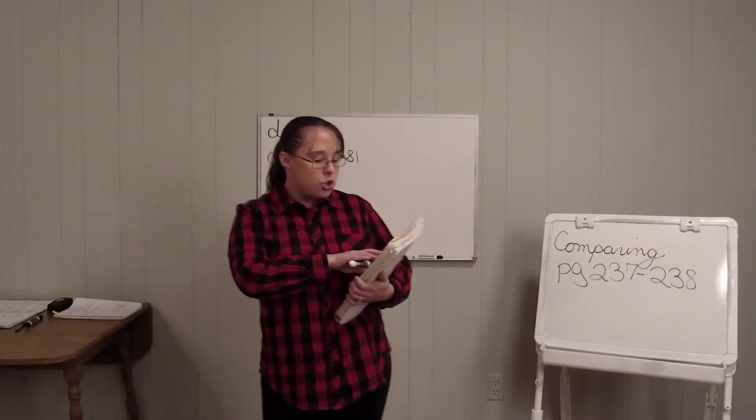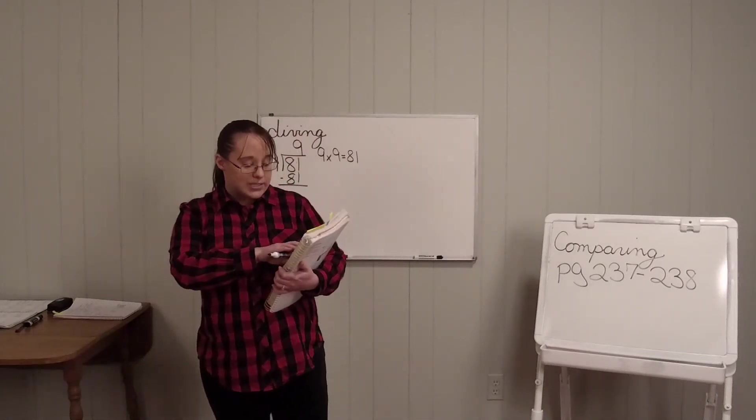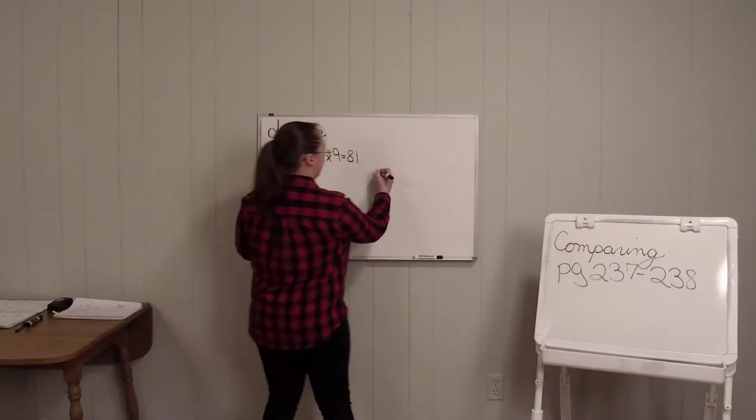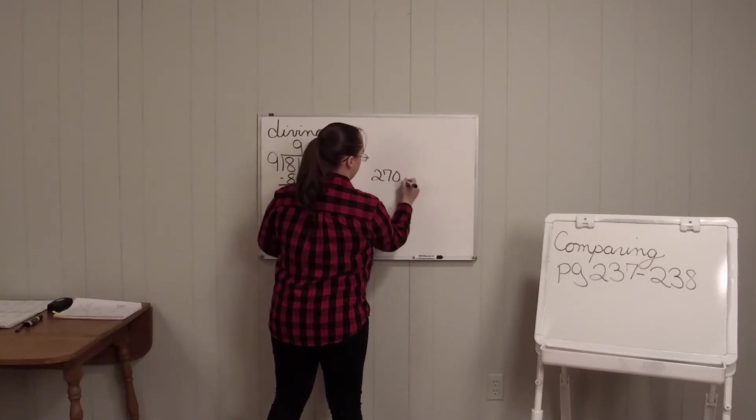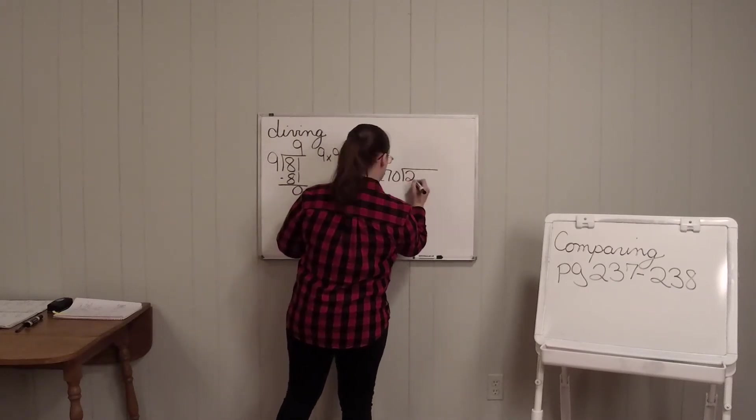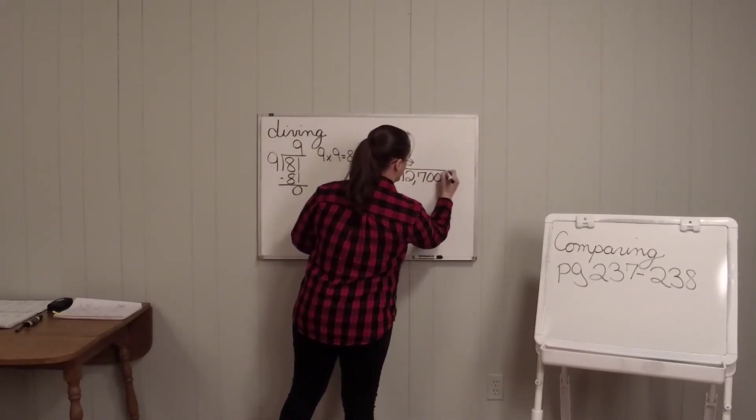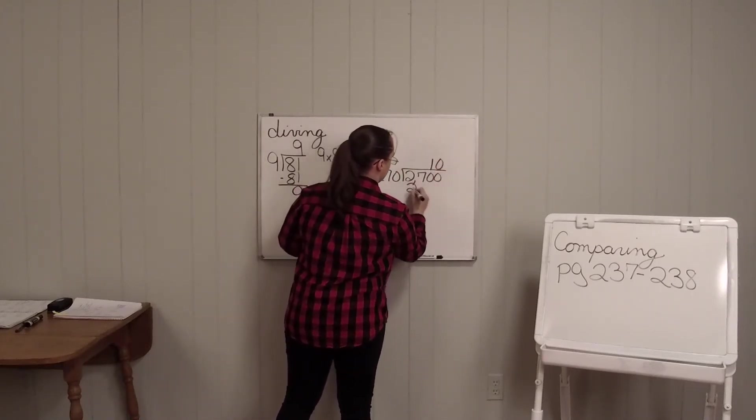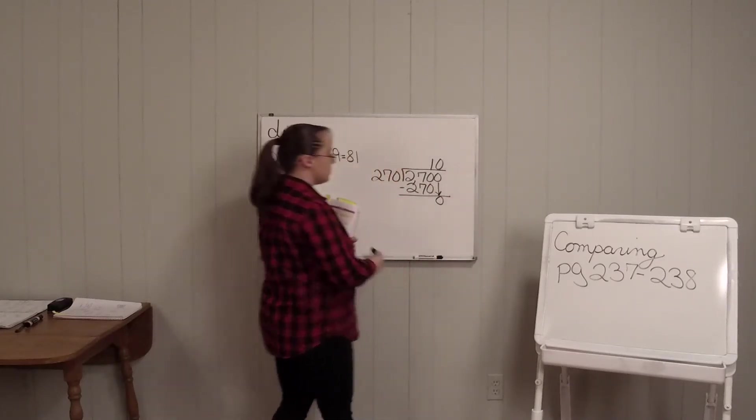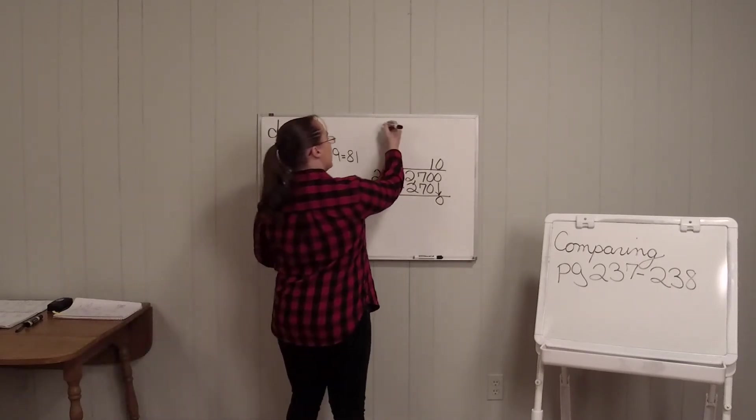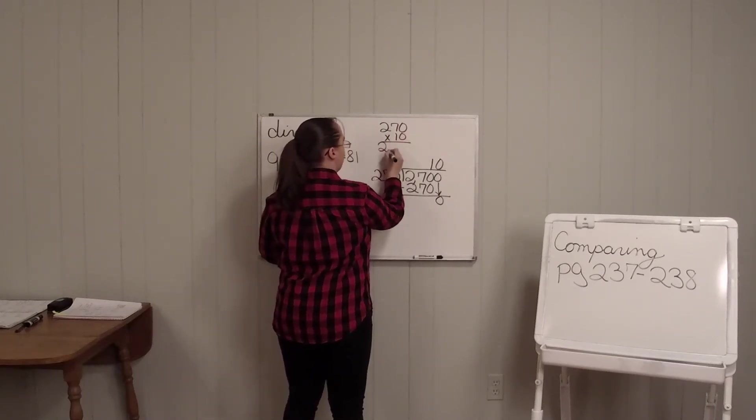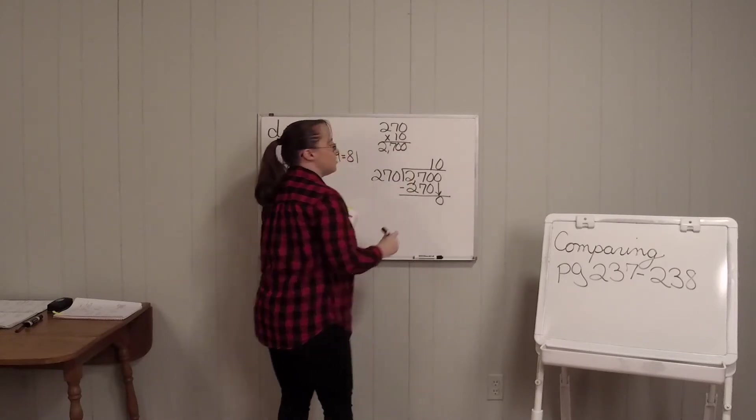Okay? Let's look at the next one in the example. It says 2,700 miles is 10 times as far as 270 miles. It's like if you said 270 times 10, and it's going to equal 2,700.